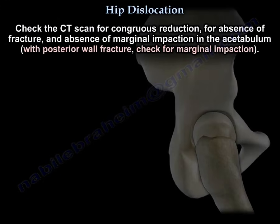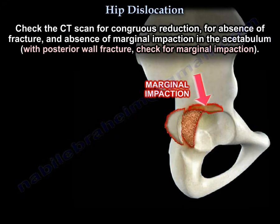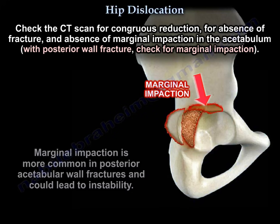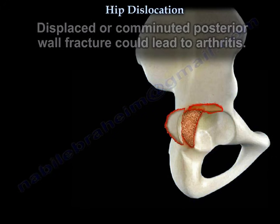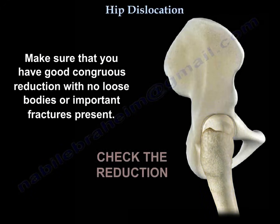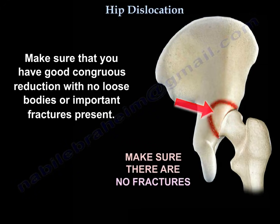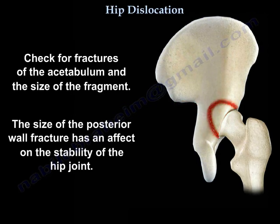Check the CT scan for congruent reduction, for absence of fracture, and for absence of marginal impaction in the acetabulum. Marginal impaction is more common in posterior wall fractures and can lead to instability. Displaced or comminuted posterior wall fracture could lead to arthritis later on. Make sure you have a good congruent reduction with no loose bodies or important fractures present. The size of the posterior wall fracture has an effect on the stability of the hip.